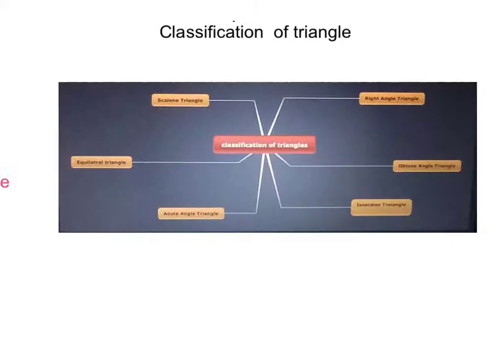Mind map of classification of triangles: Scalene triangle, right angle triangle, equilateral triangle, obtuse angle triangle, acute angle triangle, and isosceles triangle.